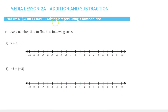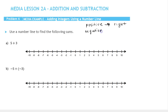In this example, we're going to add integers using a number line. A number line is a very useful way of visualizing both adding and subtracting integers. In general, this is what we're going to do: for a positive number, we're going to move to the right, and for a negative number, we're going to move to the left.